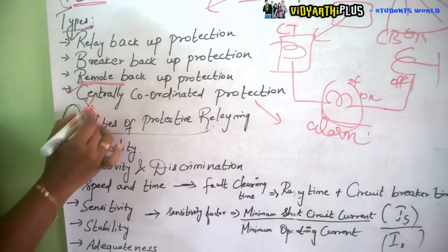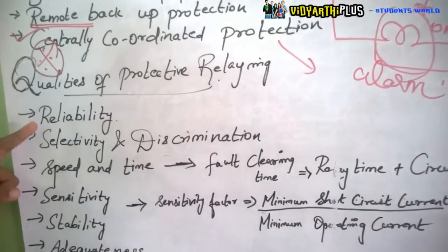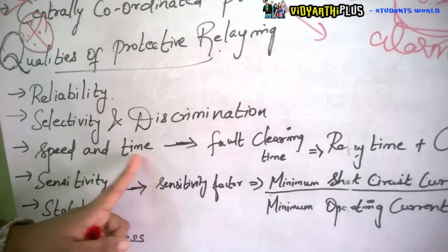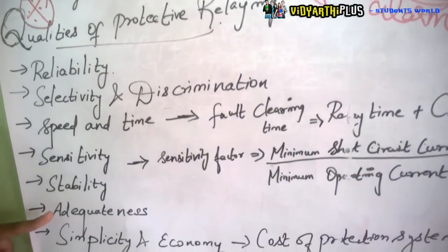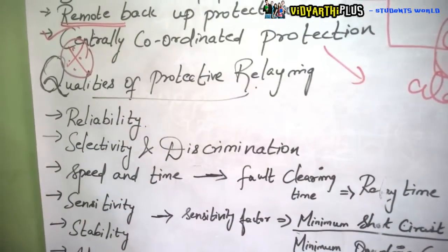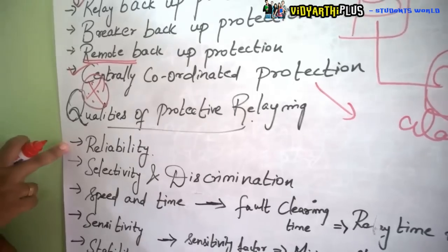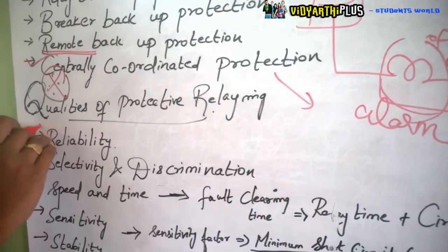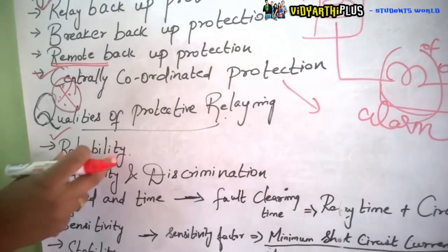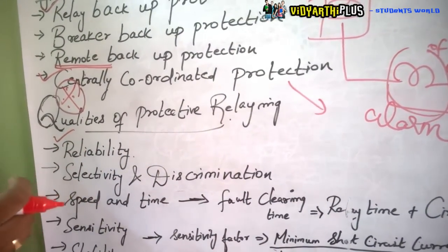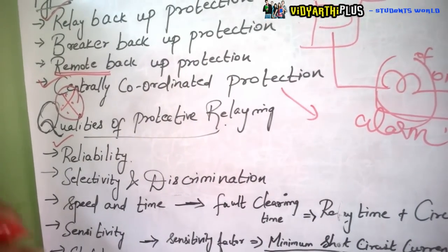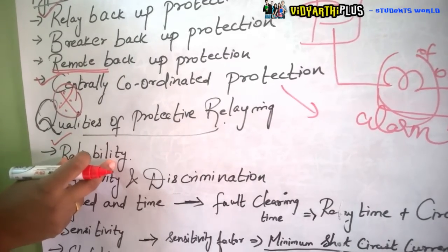Next are the qualities of protective relaying: reliability, selectivity and discrimination, speed and time, sensitivity, stability, adequateness, simplicity, and economy. First is reliability — it is the quality of the relay which ensures it will operate at the time of fault conditions. If the current immediately goes to a higher level, will the relay operate? That is given by reliability.